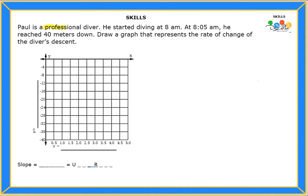We're talking about a professional diver who started diving at 8 a.m. By 8:05 — that means five minutes later — he had already reached 40 meters down. They're asking us to find the rate of change for this situation. So let's analyze: he started at 8 a.m. and by 8:05, five minutes had passed.